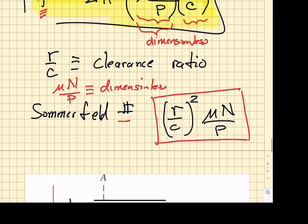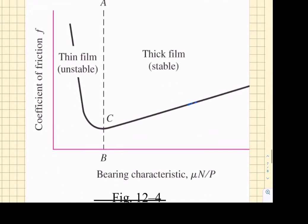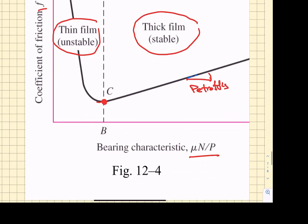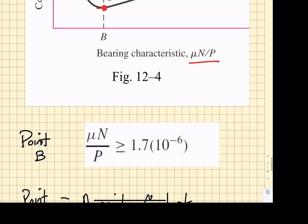Now, the most important thing we can do here is plot the coefficient of friction as a function of this dynamic viscosity related dimensionless group, and that is shown right here. We have the coefficient of friction against μn over p. This linear portion out here is Petrov's equation. Then we see an inflection point, and the coefficient of friction as we continue to decrease this dimensionless group, we find a really large increase in the coefficient of friction. This is thin film unstable lubrication, and this is thick film stable lubrication to the right. Petrov's equation describes the thick film stable lubrication. And this point C is an important boundary that determines the difference between thin and thick film. That point B is usually associated with a μn over p value of 1.7 times 10 to the minus 6.